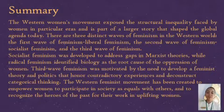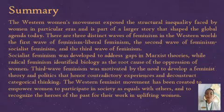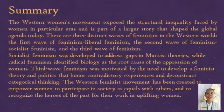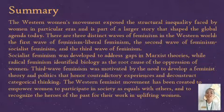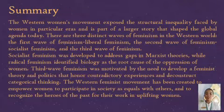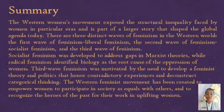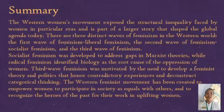Summary: The Western women's movement exposed structural inequality faced by women in particular eras and is part of a larger story that has shaped the global agenda today. There are three distinct waves of feminism in the Western world: the first wave is liberal feminism, the second wave is socialist feminism, and the third wave addresses plurality and intersectionality. Socialist feminism was developed to address gaps in Marxist theories, while radical feminism identified biology as the root cause of the oppression of women. Third wave feminism was motivated by the need to develop a feminist theory and politics that honor contradictory experiences and contracategorical thinking. The Western feminist movement was created to empower women to participate in society as equals and to recognize the heroes of the past for their work in uplifting women.